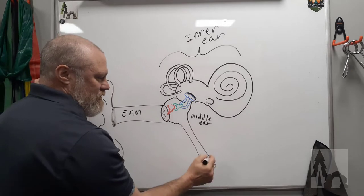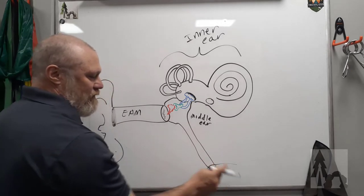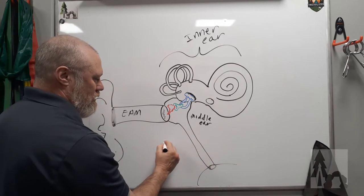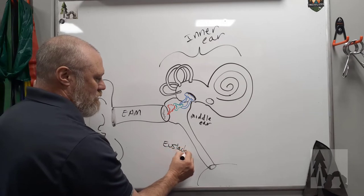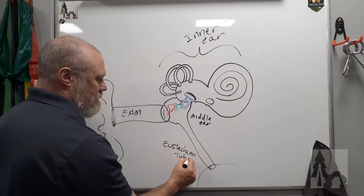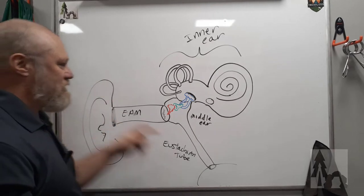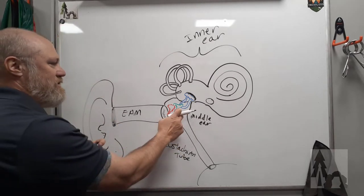The middle ear. This opening, this is the tube that runs down to the back of your throat. This is your eustachian tube. That's the eustachian tube, and it opens into the space known as the middle ear.